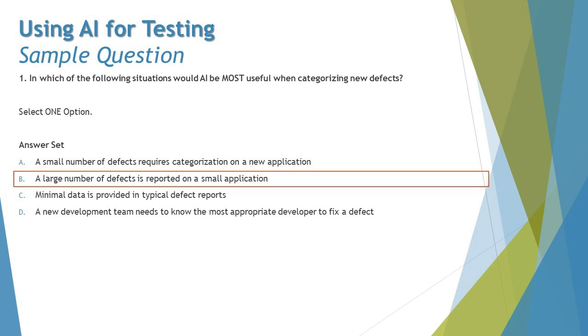If we just summarize things together, the right answer here is B: a large number of defects is reported on a small application. Given that there are a lot of defects here and the application is limited, I can certainly go ahead and use this benefit to identify the duplicates.